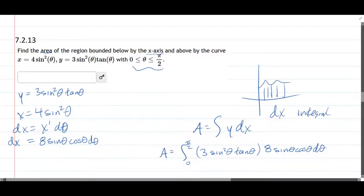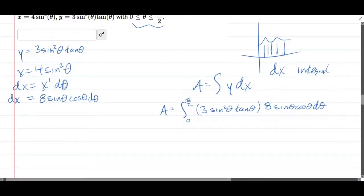Now, how in the world do we integrate this craziness? Remember, tangent is sine over cosine. We have a 3 and an 8. 3 times 8 is 24. Bring that outside. It's constant.